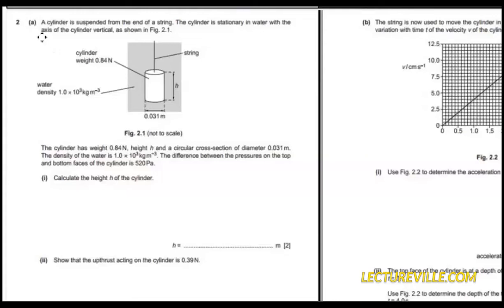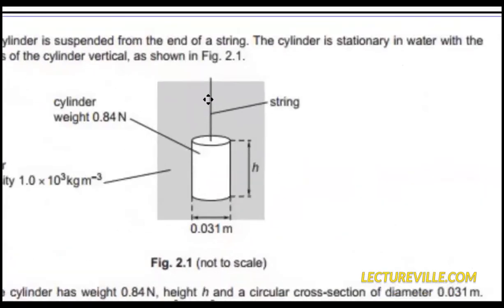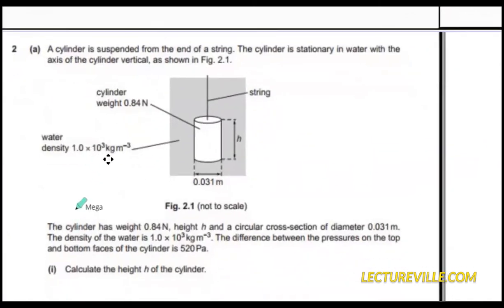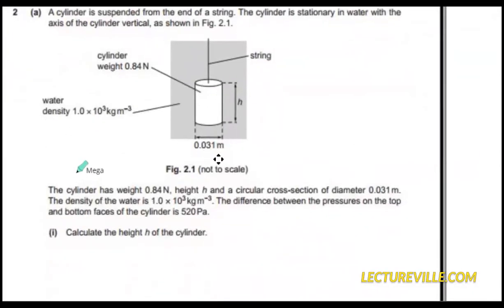Now here we have a question. This question says a cylinder is suspended from the end of a string. The cylinder is partially in water with the axis of the cylinder vertical. All of the dimensions are given on the diagram and the good thing is I can see that the weight is given in newtons, density is given in kilograms per meter cubed, and the diameter is given in meters, so no major conversion is required.